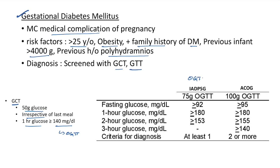For OGTT, we advise overnight fasting, measure fasting glucose, then give either 75 g or 100 g glucose. IADPSG recommends 75 g OGTT whereas ACOG recommends 100 g OGTT. According to IADPSG for 75 g GTT, cutoff values are: fasting ≥92 mg/dL, 1-hour glucose ≥180 mg/dL, 2-hour glucose ≥153 mg/dL. If at least one value is above cutoff, GDM is diagnosed.